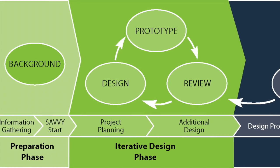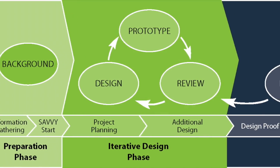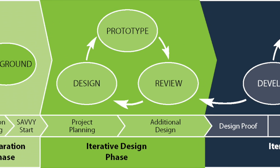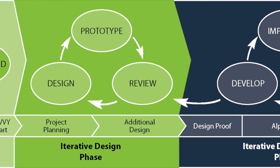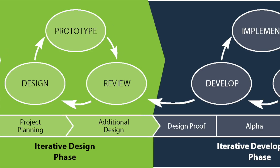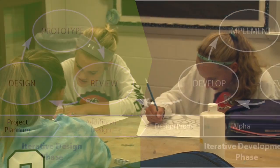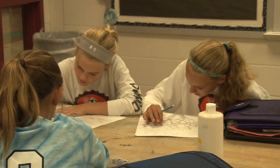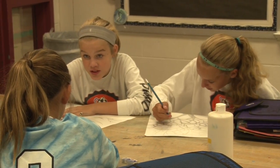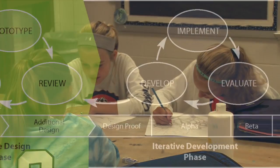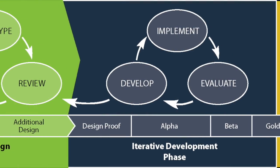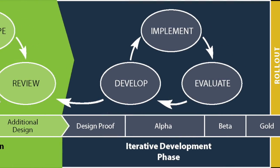SAM2 is a slightly larger, yet just as effective model, which is designed for big, complex projects. Students begin with the preparation phase. This is where a large amount of the brainstorming and background research happens. Team members may also discuss their roles for the project during this phase.